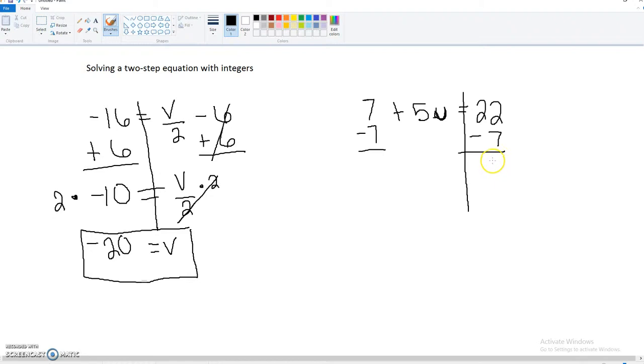Okay, so 22 minus 7. We end up getting 15. Equals, and we're going to bring down that 5u. Divide both sides by 5. And u equals 3.